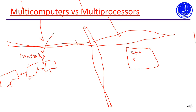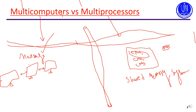If we have only one computer but it has multiple CPUs or multiple processors, such a system is called a multi-processor system. These different processors share the same main memory. Multi-processor systems are also called shared memory systems.